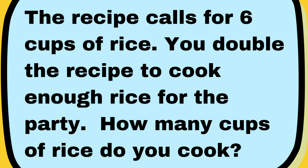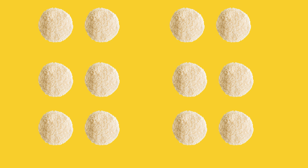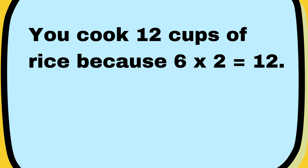A recipe calls for six cups of rice. You double the recipe to cook enough rice for the party. How many cups of rice do you cook? You cook twelve cups of rice because six times two equals twelve.